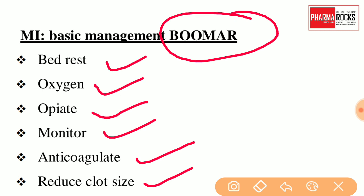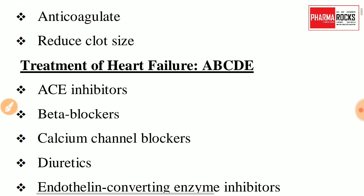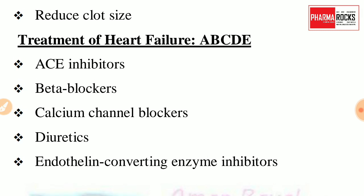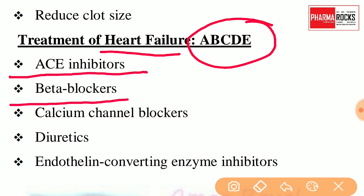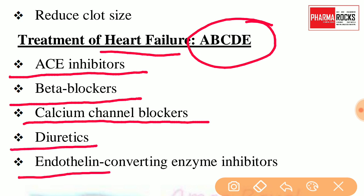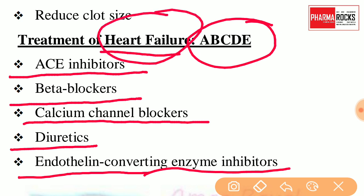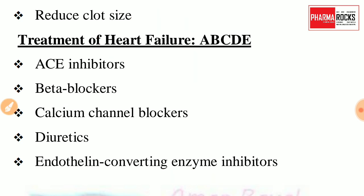The next trick is for the treatment of Heart Failure. For Heart Failure treatment, remember 'ABCDE'. A stands for ACE Inhibitors, B stands for Beta Blockers, C stands for Calcium Channel Blockers, D stands for Diuretics, and E stands for Endothelin Converting Enzyme Inhibitors. Using this trick, you can easily remember all the treatments used in Heart Failure.